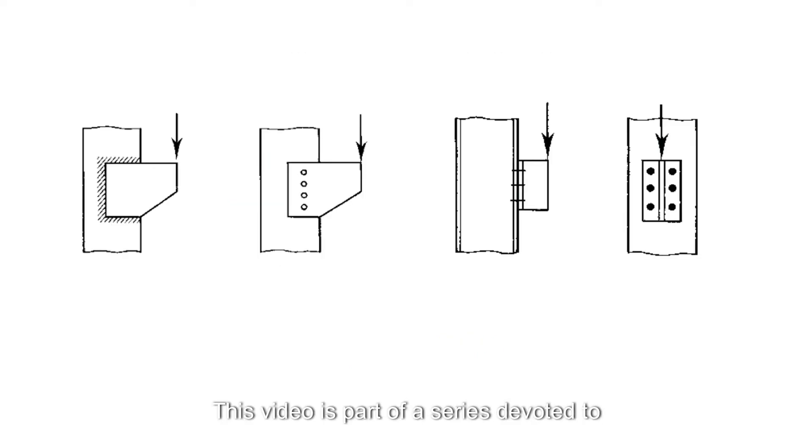This video is part of a series devoted to simple connections. Eccentrically loaded connections covered in future videos are those in which the line of action of the load does not act through the center of gravity of the connection. The connections shown in these figures are of this type. In these cases, the load is not resisted equally by each fastener or each segment of weld, and the determination of the distribution of the load is the complicating factor in the design of this type of connection.